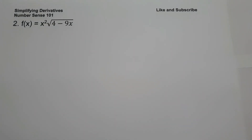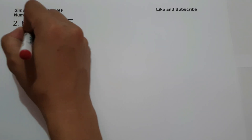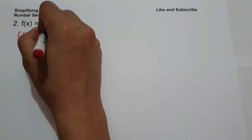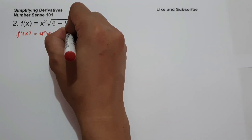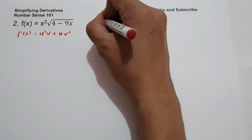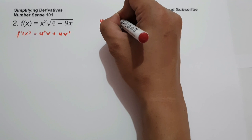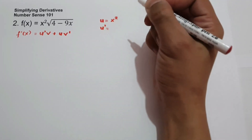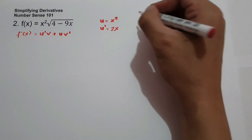On number 2, what is the derivative of x² times square root of 4 minus 9x? For this problem, we are going to use product rule, that is f'(x) equals u' times v plus u times v'. So let us identify the value of u, that is x², and u' is the derivative of x², which will be 2x.